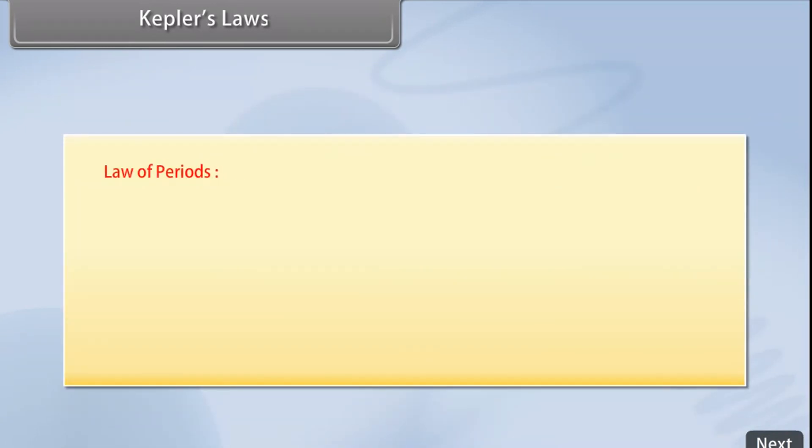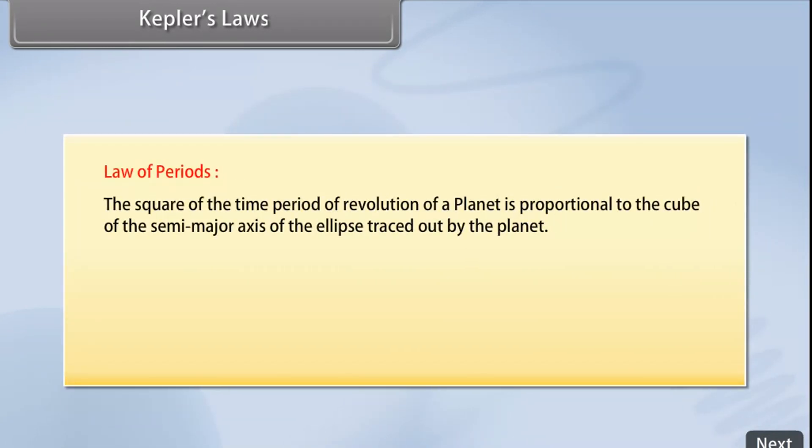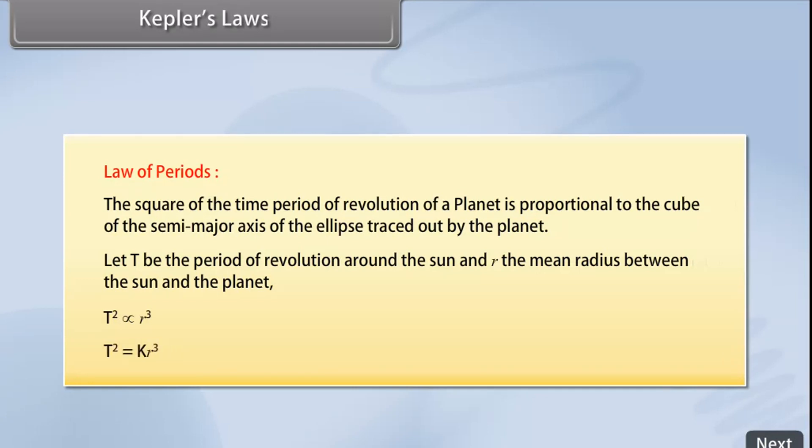Law of Periods: The square of the time period of revolution of a planet is proportional to the cube of the semi-major axis of the ellipse traced out by the planet. Let T be the period of revolution around the sun and R the mean radius between the sun and the planet. T square is directly proportional to R cube. T square is equal to K R cube.